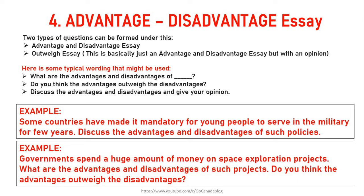A second example is an outweigh essay: 'Governments spend a huge amount of money on space exploration projects. What are the advantages and disadvantages of such projects? Do you think the advantages outweigh the disadvantages?' In this type, you list advantages and disadvantages, but you also give your opinion at the end on whether the advantages outweigh the disadvantages.